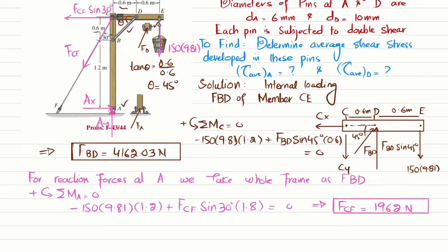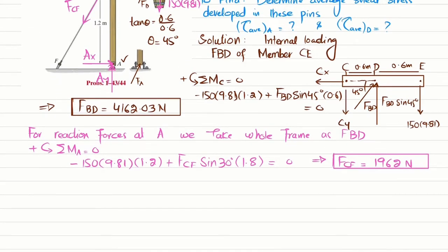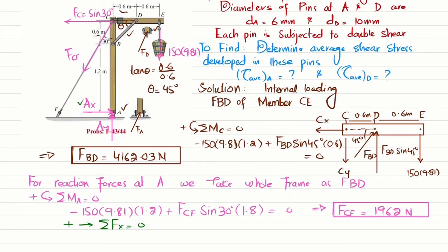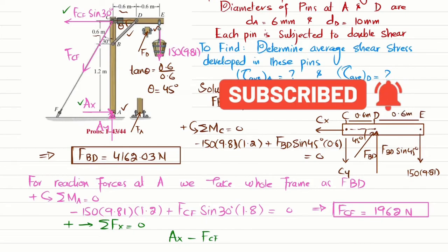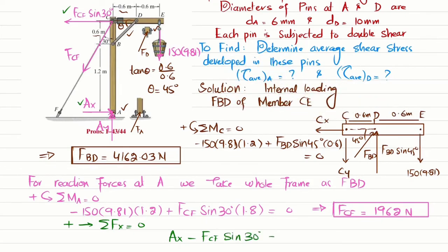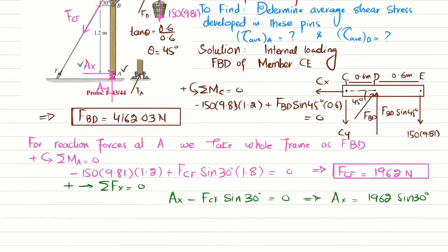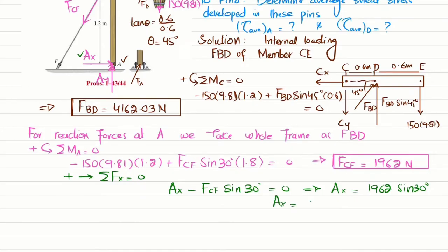Now we find A_x and A_y using equations of equilibrium. Sum of all forces along the horizontal axis equals zero, taking the positive x-direction as positive: A_x − F_CF × sin(30°) = 0. Substituting F_CF = 1962 N gives A_x = 1962 × sin(30°) = 981 N.